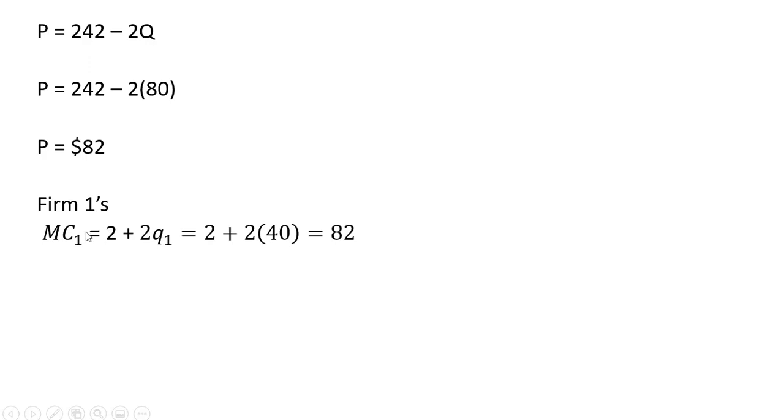Notice one thing here, that the marginal cost for firm 1 at 40 units of output is 82. So price does equal marginal cost. And for firm 2, if we look at firm 2's marginal cost at 40 units of output, it also equals 82. So in Bertrand competition, price equals marginal cost. Okay, that's it.